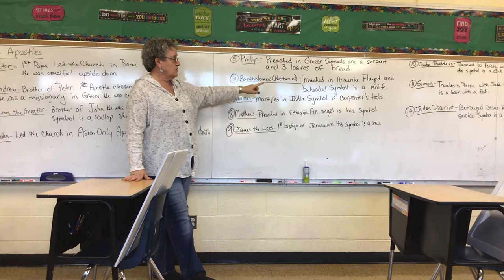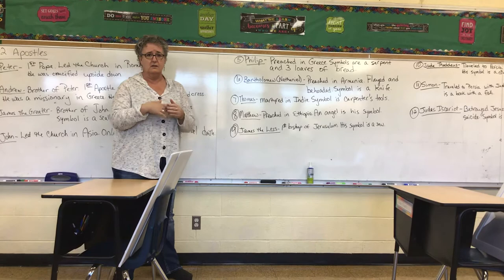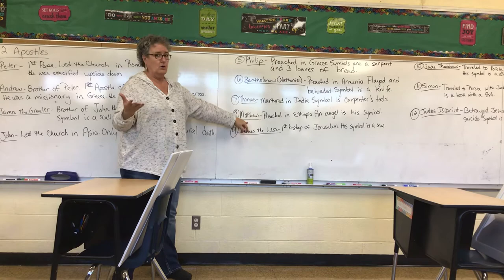Bartholomew is also known as Nathaniel. He went to Armenia. He was flayed and beheaded, so his symbol is a knife. Thomas was martyred in India. He was the one that doubted Jesus rose until he could actually put his hands in his wounds. His symbol is a carpenter's tool because he told one of the leaders in India that he was a carpenter like Jesus.